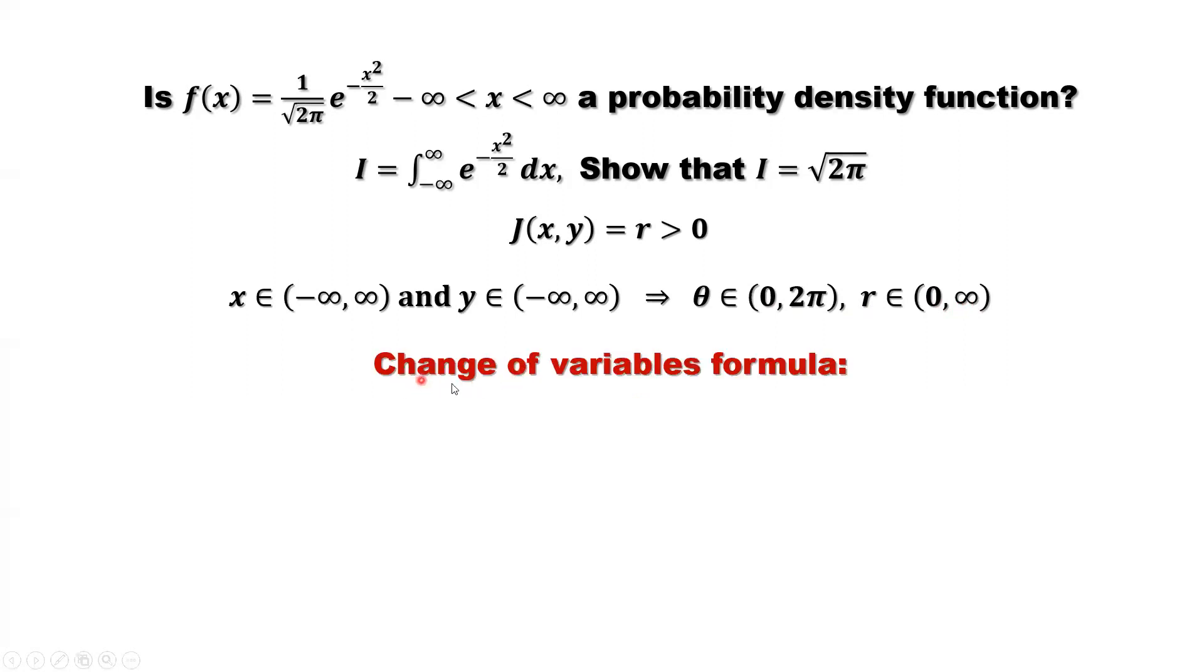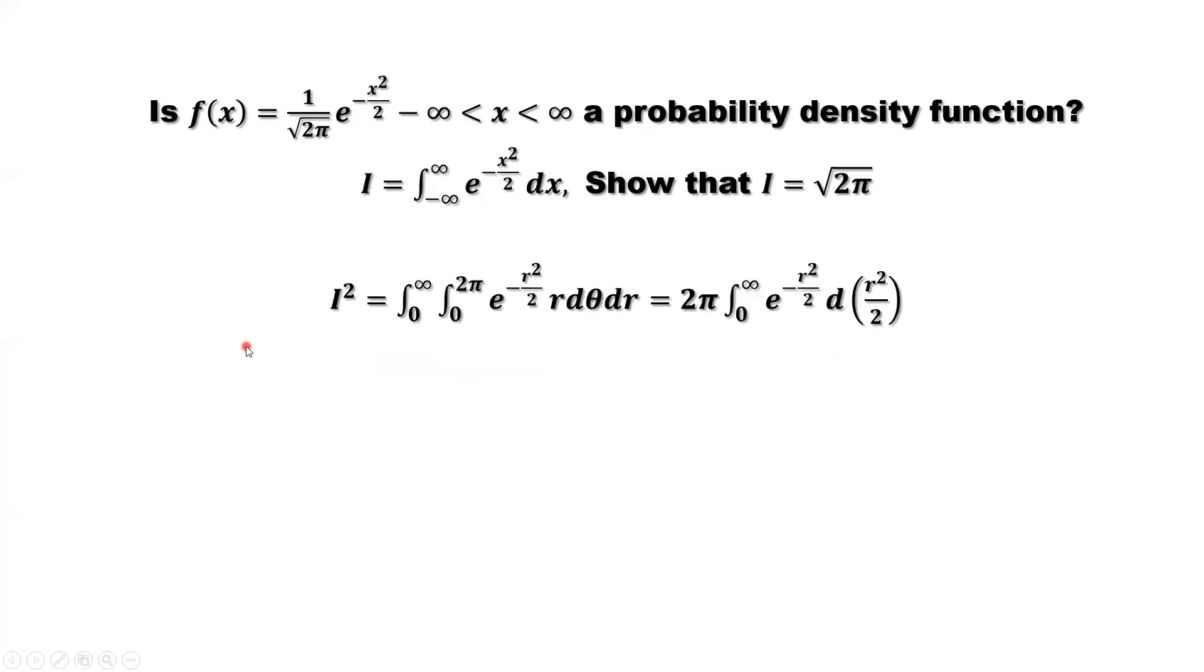We use the change of variables formula for double integrals. Here we already defined little r equals square root of x squared plus y squared. Without square root, that's r squared. So here we have to add a factor of absolute value of Jacobian. That's dθ dr. That's the formula. What is J here? That's r. Plug in. We are here.